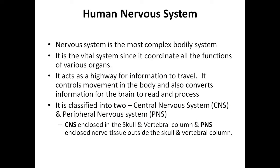The human nervous system is the most complex bodily system. We will discuss its organs and functions, and how it coordinates the body systems. It is a vital system — it acts as a highway for information to travel, controls movement in the body, and converts information for the brain to read and process.